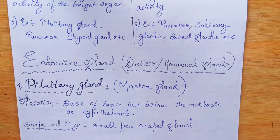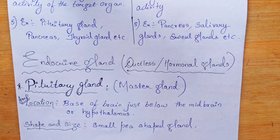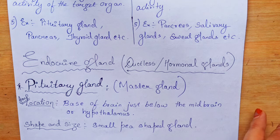The pancreas is special because it has two parts — it functions as both an endocrine gland and an exocrine gland. It releases both enzymes and hormones. Keep this in mind for exams because teachers often ask about this.